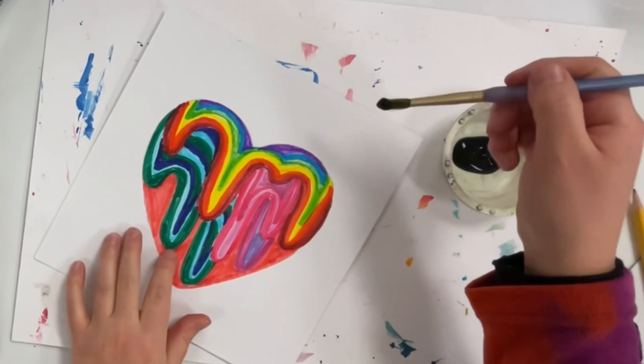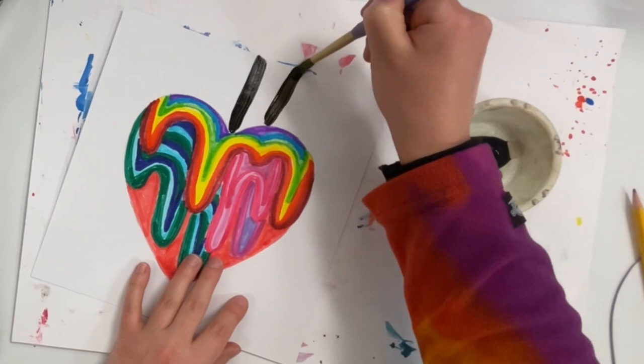When my heart is all colored, I'm going to get a placemat and some black paint. I'm painting radiating lines around my heart. I'm starting at the edge of the heart and going away from it all the way off the end of the paper.